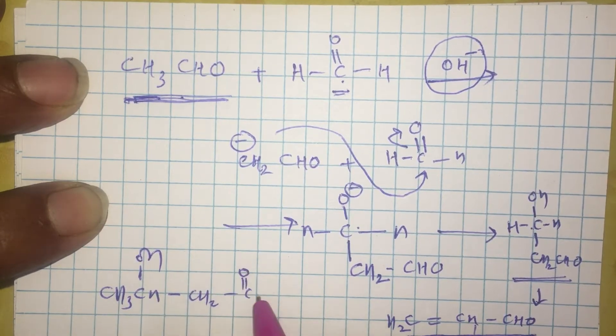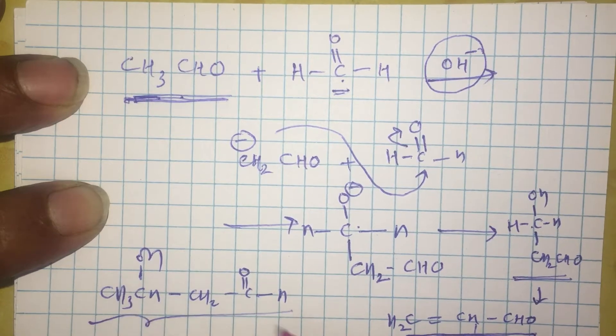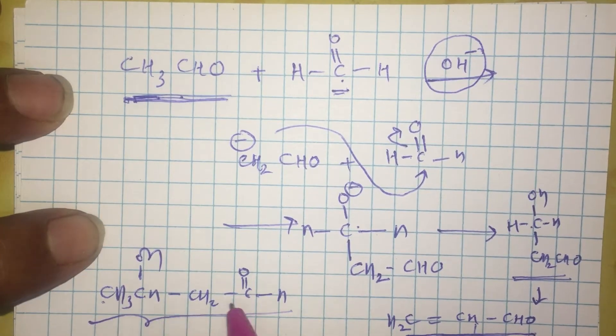CH3-CHOH-CH2-CHO. This is the dimerization product, which is of course 3-hydroxybutanal.